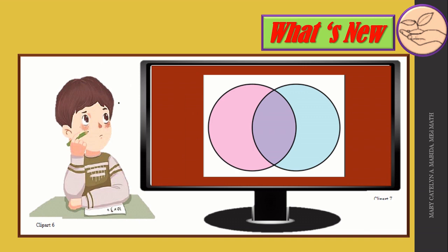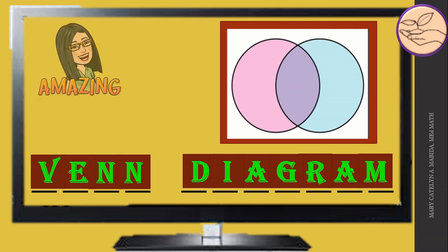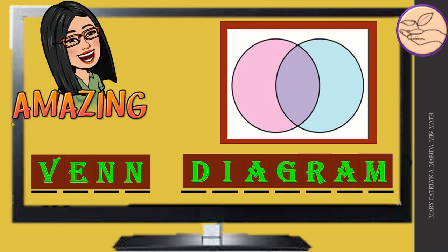What's new? The intersection, union, and difference of two sets can be illustrated using a figure on the screen. Guess the name of the figure by unscrambling the letters N-E-V-N for the first word and A-D-G-M-A-I-R for the second word. You can pause this video to think of the answer. Now let's check your answer — the answer is Venn diagram!